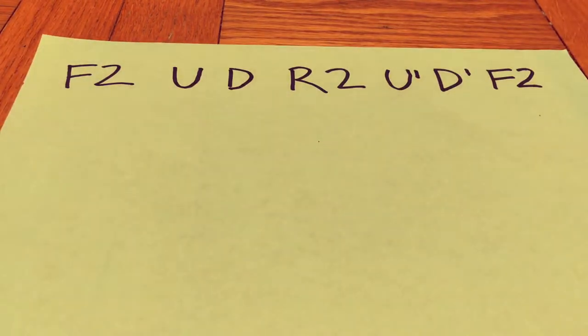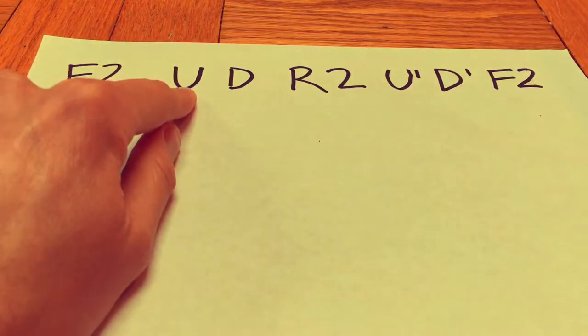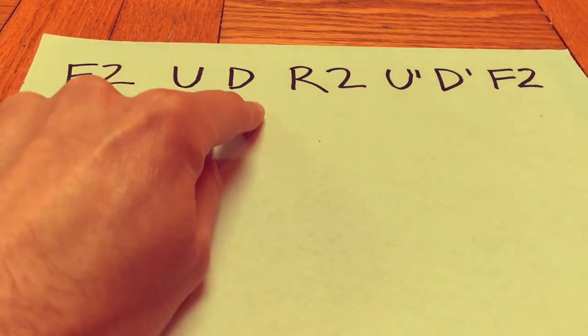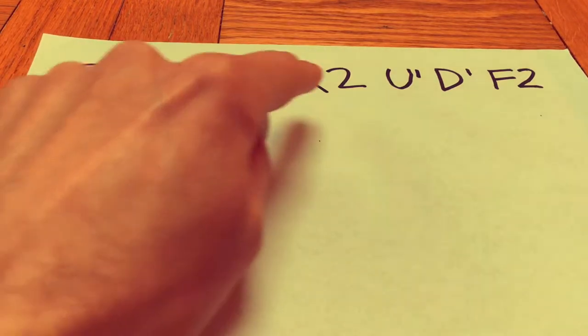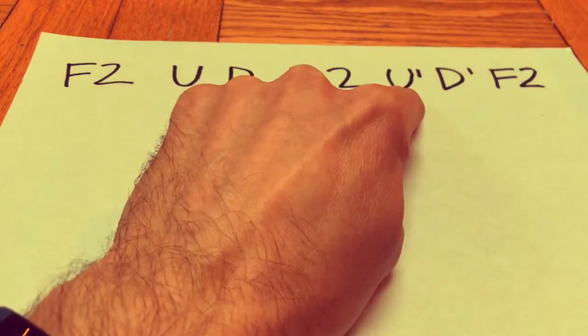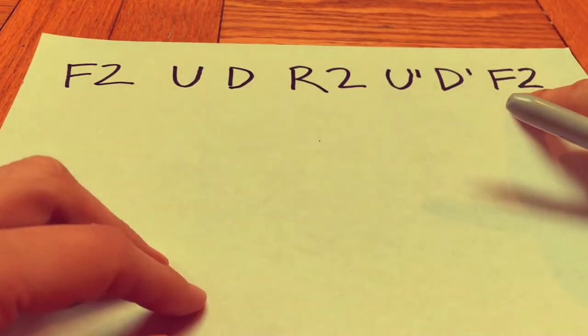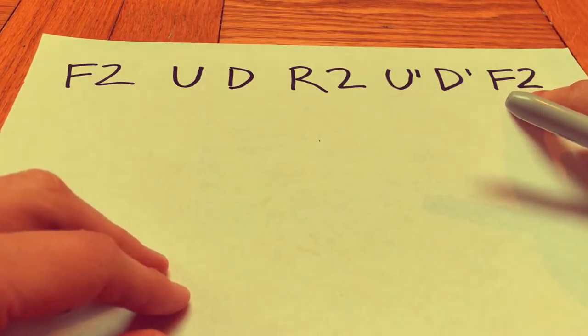That's the algorithm and of course you know that means a half turn on the front, a clockwise turn on the top and a clockwise turn on the bottom, then a half turn on the right hand side, then an anti-clockwise turn on the top and bottom, followed by a half turn on the front face.